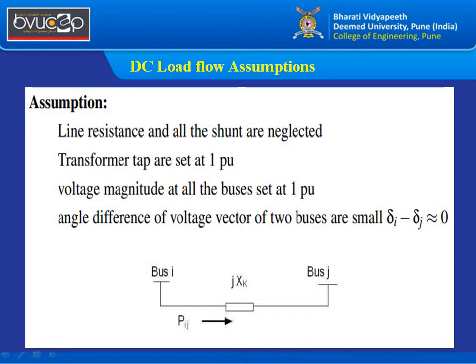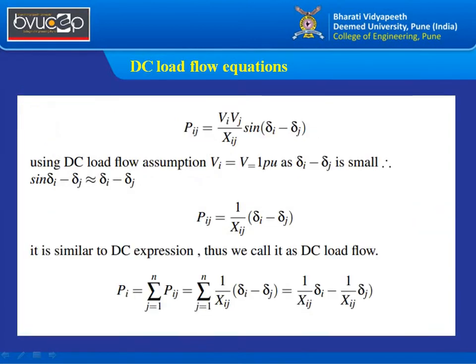These assumptions have already been covered in detail in the previous lecture. In the DC load flow equation, the generalized equation is given by Pij, which is the product of voltage magnitudes divided by reactance times the sine of the angle difference between the two buses. Since voltage magnitude is assumed to be one and the angle difference is small, the equation reduces to Pij = (1/Xij)(δi − δj). This expression resembles a DC expression — that is why we call it DC load flow, as there is no trigonometric term or continuously varying voltage.